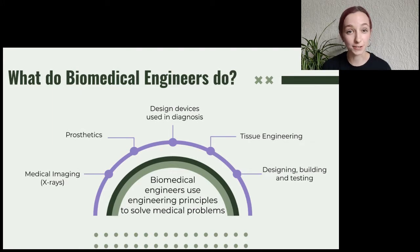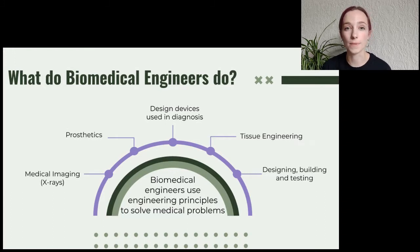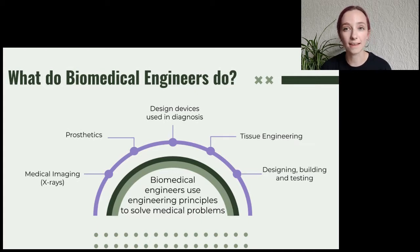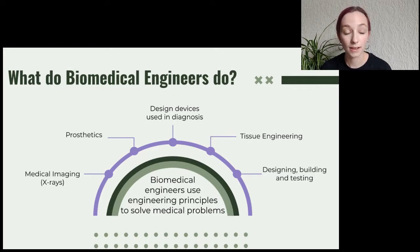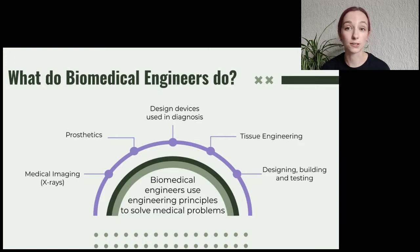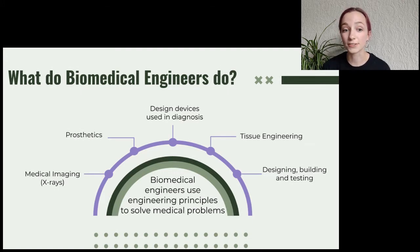So what do biomedical engineers do? Biomedical engineers use engineering principles to help solve medical problems. An example of something that a biomedical engineer would be involved in creating is prosthetics, which are artificial body parts such as a leg, hand, or even the heart, which would be given to a patient whose own natural body part is missing or isn't working and needs to be replaced. Biomedical engineers are also involved in creating technology like X-rays which allow you to see what's going on inside the body, and they can also get involved in designing equipment and scientific processes used to help find out what's wrong with the patient in a field called diagnostics.